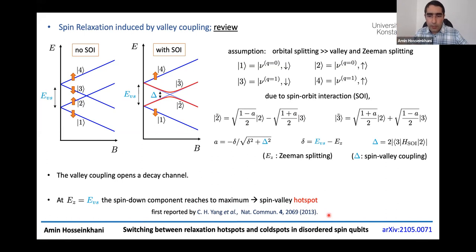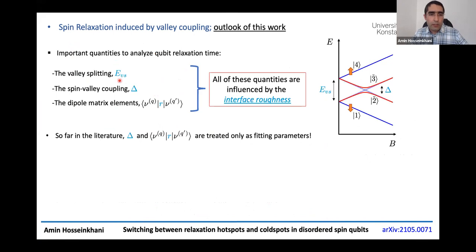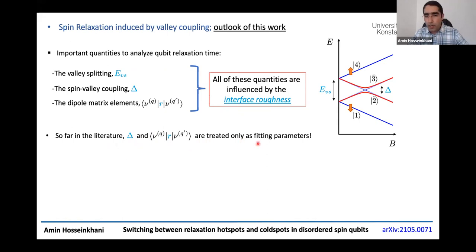To properly analyze this process from a theoretical perspective, one needs to know three important quantities: the valley splitting, the spin-valley coupling, and the dipole matrix elements. These three parameters do not explicitly depend on each other; however, all of them are strongly influenced by a common factor — the interface roughness. The issue with current literature is that the spin-valley coupling and dipole matrix elements are simply treated as free parameters obtained by fitting theory to experiment, which prevents detailed understanding.